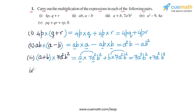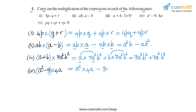In part 4, we have to multiply (a² − 9) and 4a. The first expression is a binomial and the second is a monomial. Applying the distributive law, we expand this as a² into 4a minus 9 into 4a. So a² into 4a gives 4a³, and 9 into 4a gives 36a. The answer in part 4 is 4a³ − 36a.